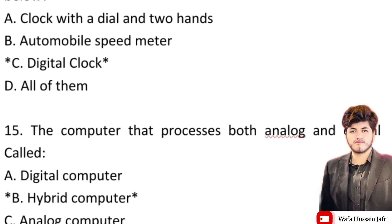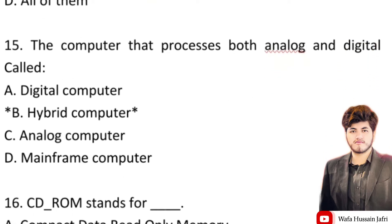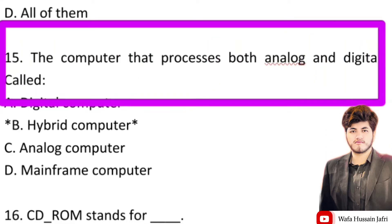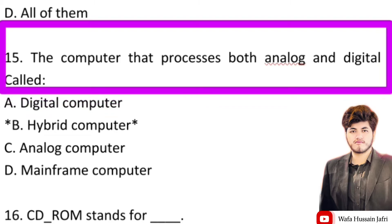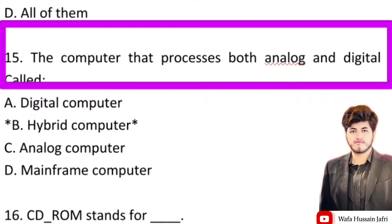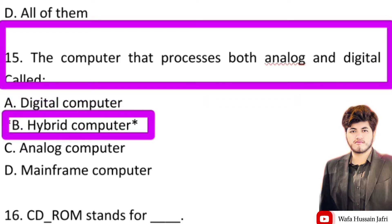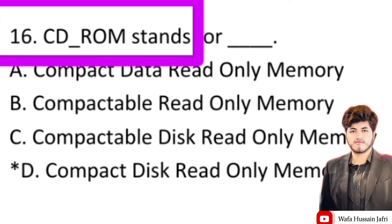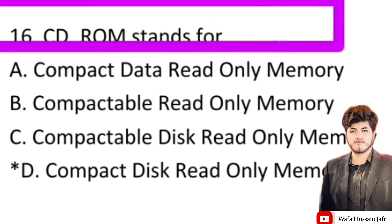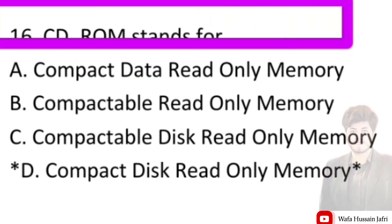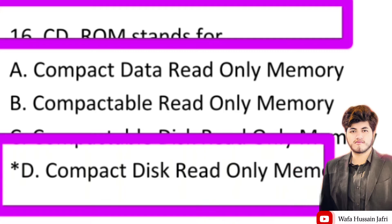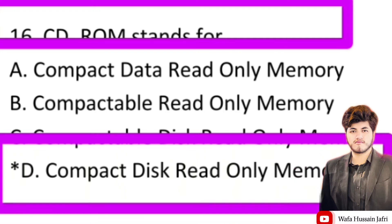Similarly, the next question is: the computer that processes both analog and digital is called a hybrid computer. And our next question is: CD-ROM stands for — the right answer is compact disk read only memory.